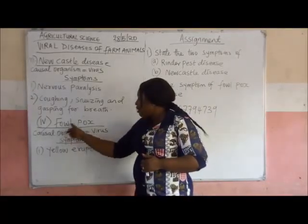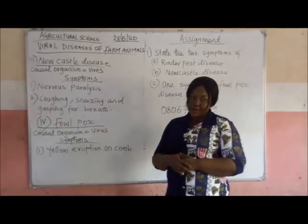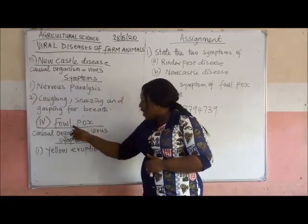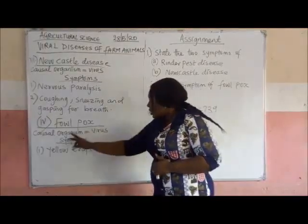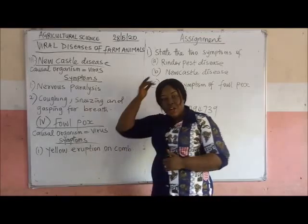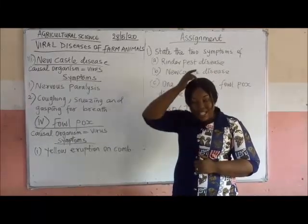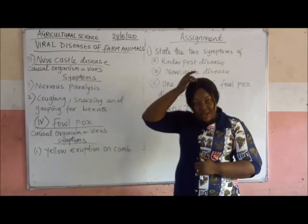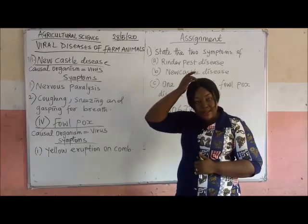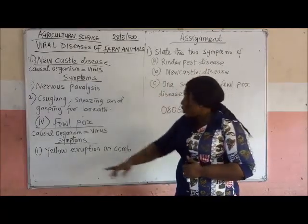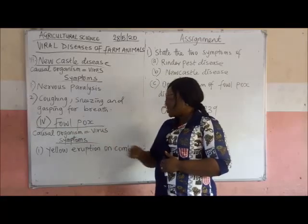Finally, let us look at Fowlpox disease. The cause of the disease is virus. The species of animals affected: Fowlpox affects only poultry. The symptom is yellow eruption on the comb of the poultry. You know what a comb is — the comb is that reddish structure that appears on the head of the bird. So instead of the comb being red, it will be seen to have yellow eruptions. That is the only symptom of Fowlpox disease.